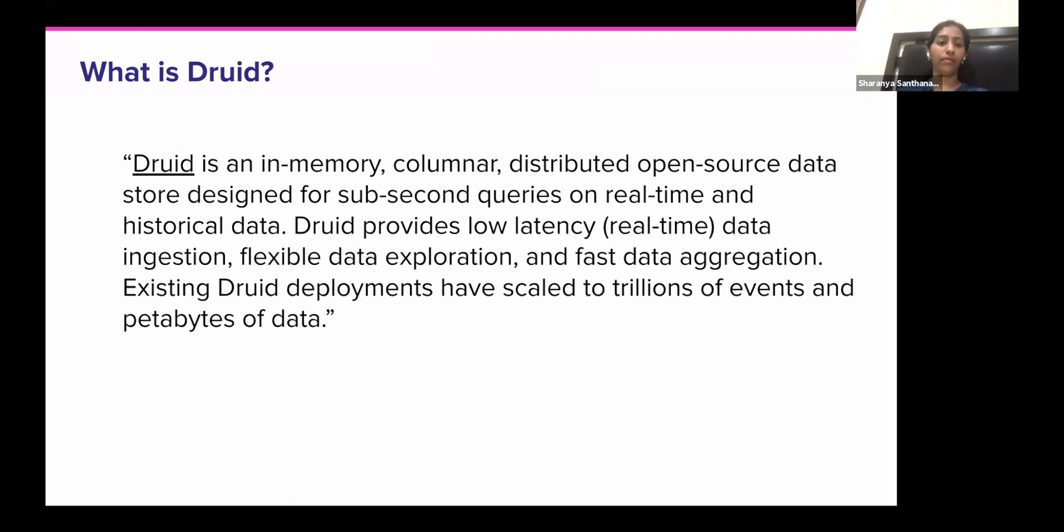So here comes Druid. I've just copied this from the open source documentation, but basically Druid is an in-memory columnar time series data store, and it's designed such that it provides sub-second query latencies on real-time as well as historical data. And Druid has been pretty popular, used across a lot of big companies and has been known to scale really well to support trillions of events and petabytes of data.